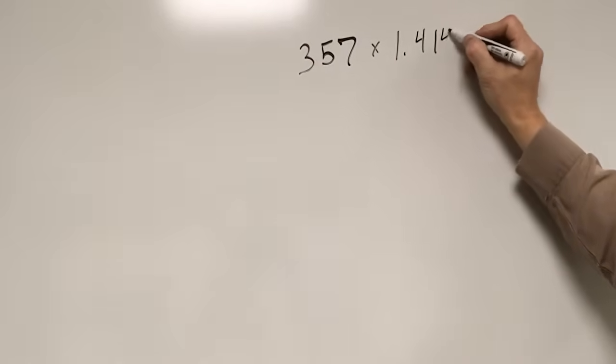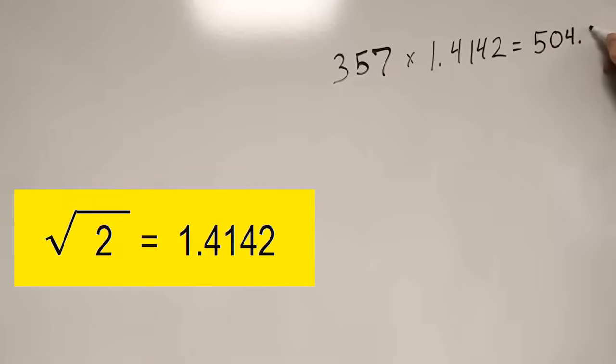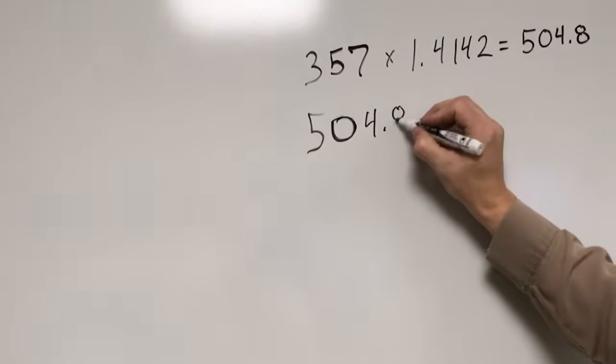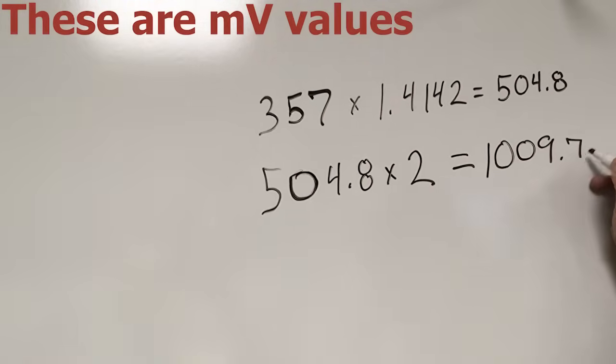Begin by multiplying the value displayed on the screen by the square root of 2, then double that number. This is the amount of actual voltage fluctuation produced by the proximity measurement.